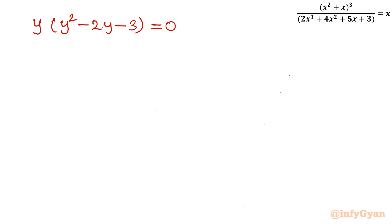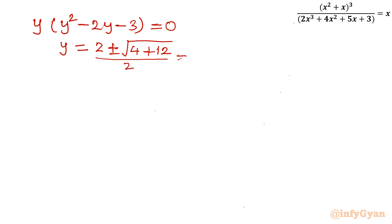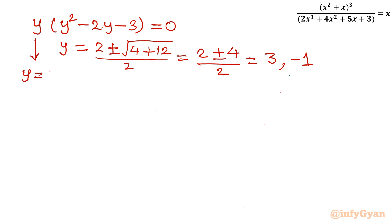Solving the quadratic y² - 2y - 3 = 0 using the Sridharacharya formula: y = [-b ± √(b² - 4ac)] / 2a = [2 ± √(4 + 12)] / 2 = [2 ± √16] / 2 = [2 ± 4] / 2. Taking the plus sign gives y = 6/2 = 3; taking the minus sign gives y = -2/2 = -1. From the factored form, y = 0 as well. So our three y values are: y = 0, y = 3, y = -1.